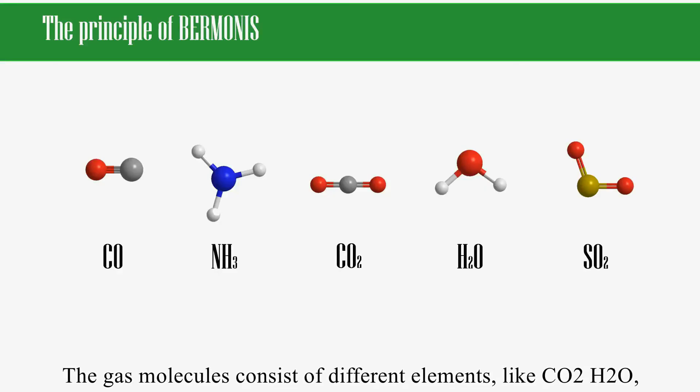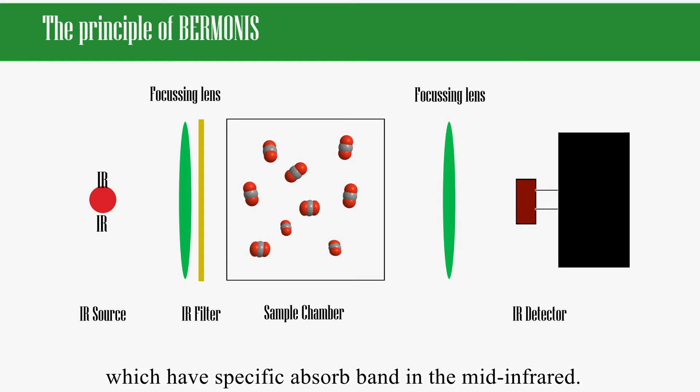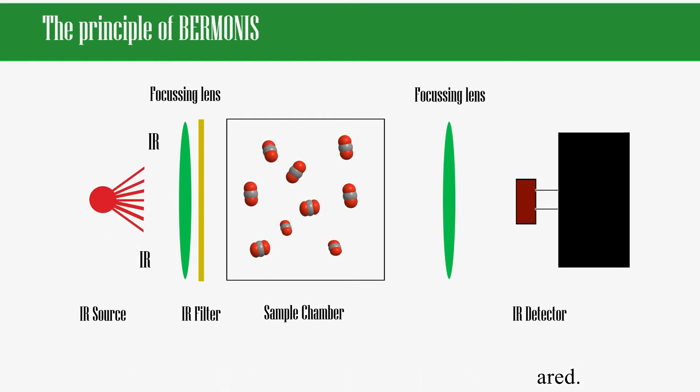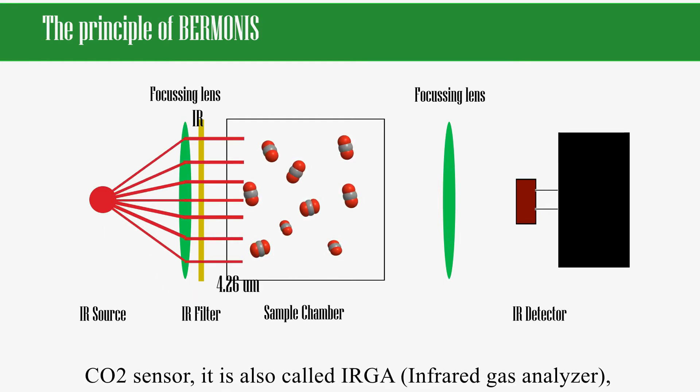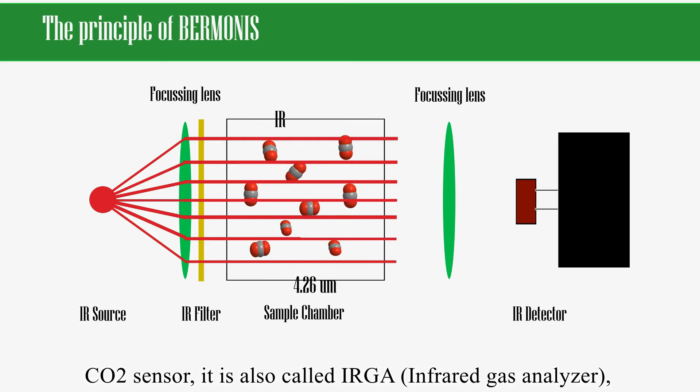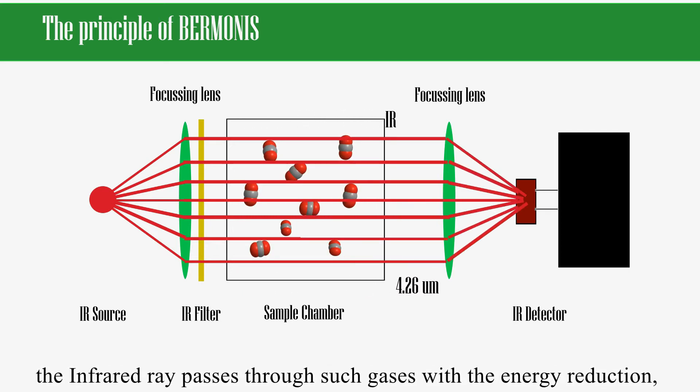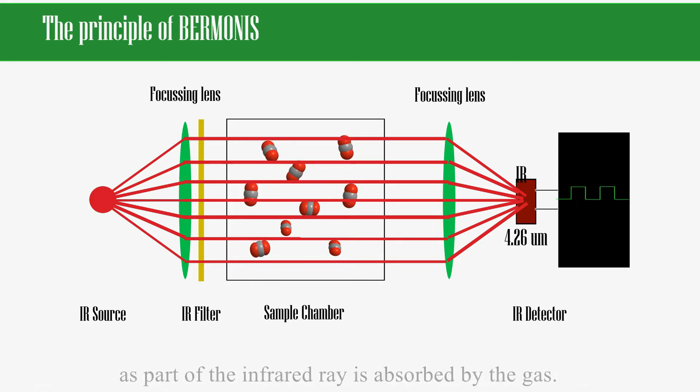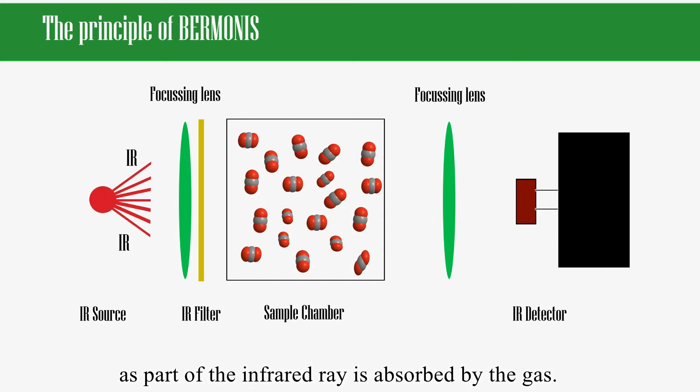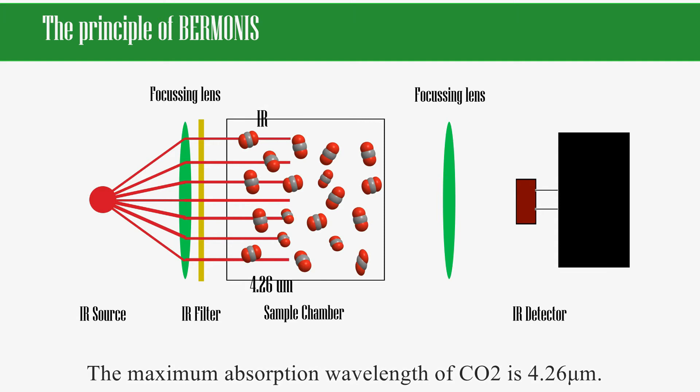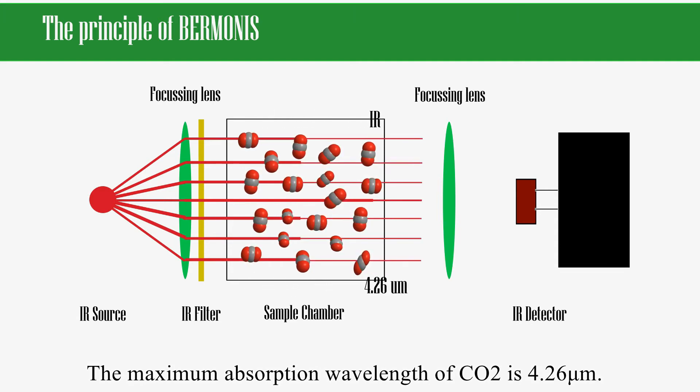The gas molecules consist of different elements like CO2 and water, which have specific absorption bands in the mid-infrared. The CO2 sensor is also called infrared gas analyzer. The infrared ray passes through such gases with energy reduction, as part of the infrared ray is absorbed by the gas. The maximum absorption wavelength of CO2 is 4.26 micrometers.